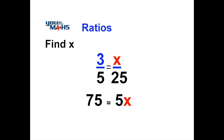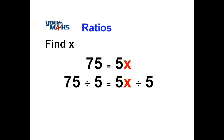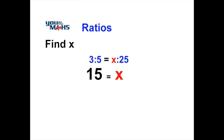To solve this equation we have to remove the 5 near the x. Now 5x means 5 multiplied by x, so the opposite of multiplying by 5 is to divide by 5. We have to do the same to both the left hand and right hand side. 75 divided by 5 is 15, and 5x divided by 5 removes the 5 to give us x equals 15. So in the original ratio, 3 is to 5 is equal to 15 to 25.